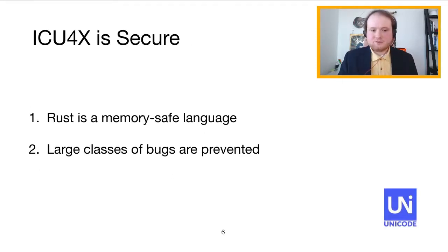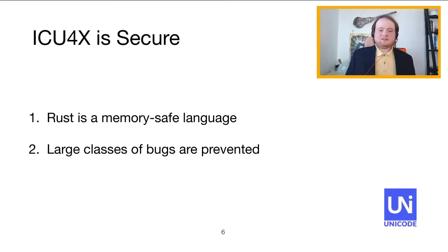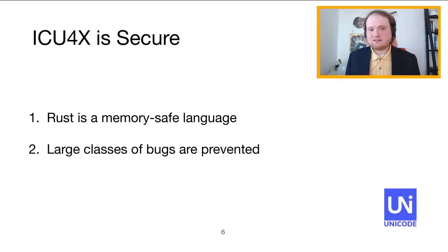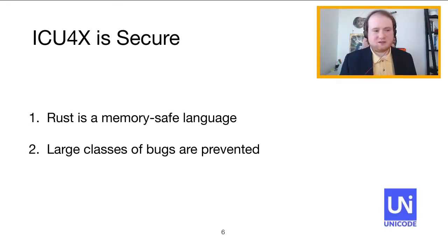The third main value proposition for ICU4X is security. Rust's type system and ownership model guarantee memory safety and thread safety, preventing large classes of bugs and vulnerabilities.